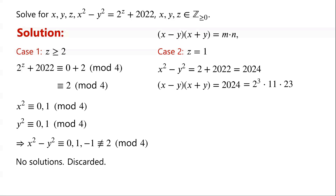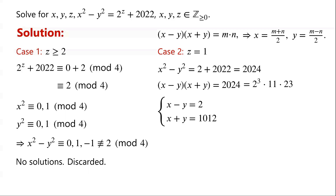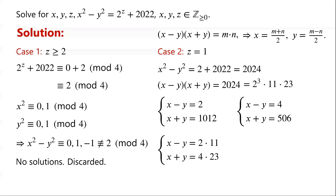We set x minus y times x plus y equals m times n, assuming m is greater than or equal to n. Then x minus y equals n and x plus y equals m. So x equals (m plus n) over 2, and y equals (m minus n) over 2. Since x and y are non-negative integers, m and n must have the same parity. Since 2024 is even, m and n must both be even. There are 4 possibilities: x minus y equals 2 and x plus y equals 1012; or x minus y equals 4 and x plus y equals 506; or x minus y equals 22 and x plus y equals 92; or x minus y equals 44 and x plus y equals 46.